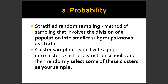The next sampling technique under probability is cluster sampling. You divide the population into clusters, such as districts or schools, and then randomly select some of these clusters as your sample. For example, in Bacolod DepEd we have seven districts — District 1 up to District 7. Out of these districts, we select one, two, or three districts to participate in our survey, and from those clusters we randomly pick the schools. That is cluster sampling, commonly used for a wider range of population size.